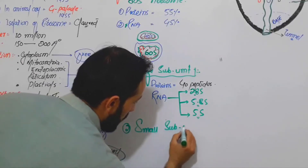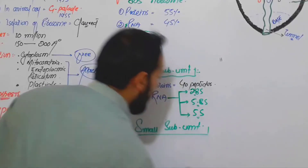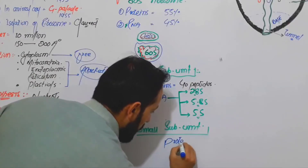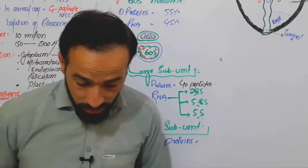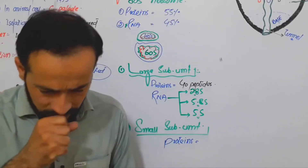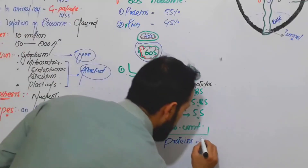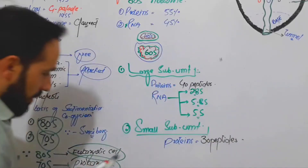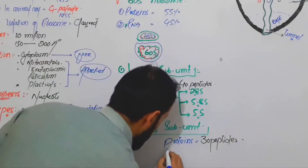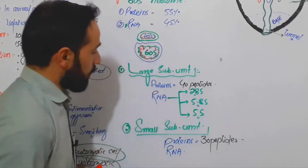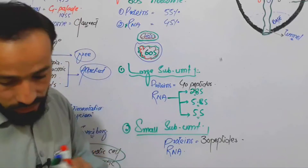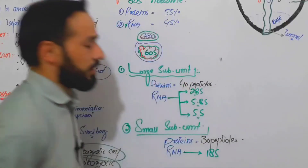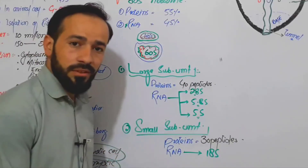Now the small subunit also contains proteins. In the small subunit there are about 30 peptides. As for RNA, in the small subunit of the 80S ribosome there is only one RNA, and that is the 18S RNA.